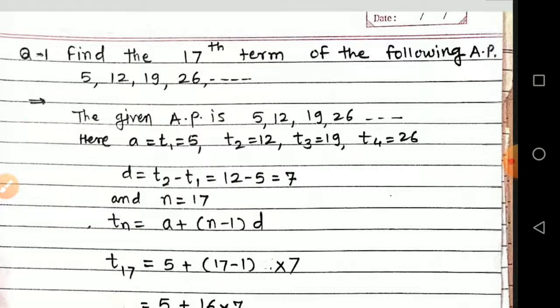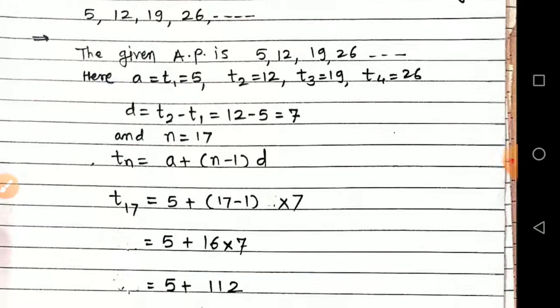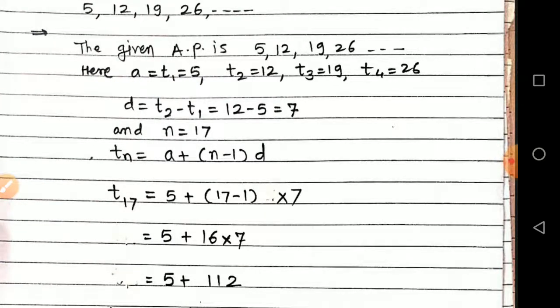Now write down the formula for TN. TN is equal to A plus N minus 1 in the bracket into d. Now fill the values in their proper places. T17 is equal to 5 plus 17 minus 1